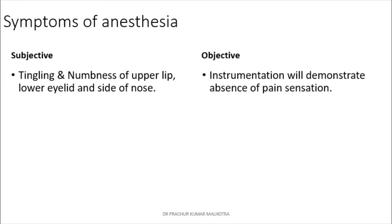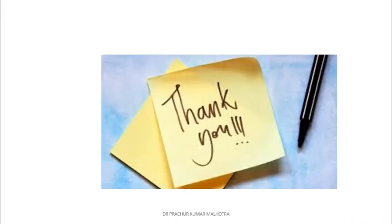To check whether local anesthesia has been achieved, symptoms are broadly divided into subjective and objective. Subjective symptoms are patient-specific: the patient reports tingling and numbness of the upper lip, lower eyelid, and the side of the nose. Objective symptoms are confirmed by the clinician — instrumentation will demonstrate absence of pain in the area of the nerve supply. This concludes the lecture on the infraorbital nerve block.